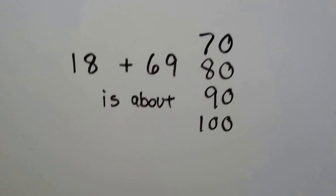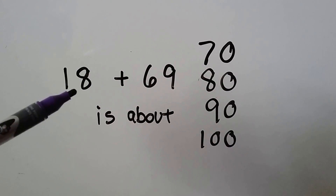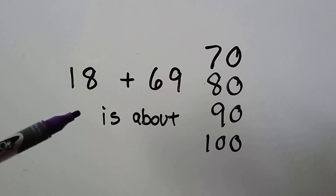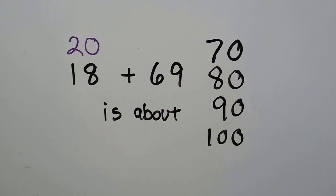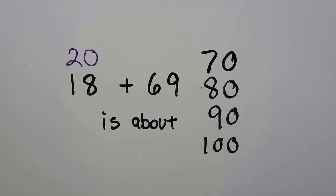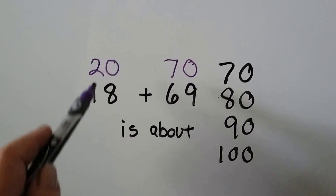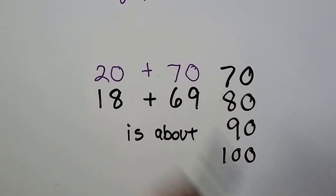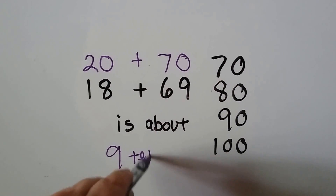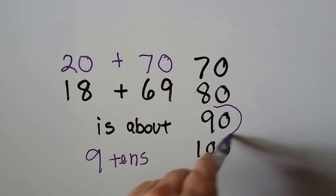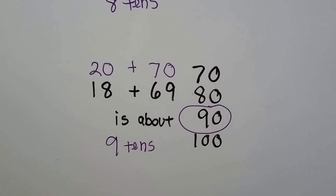Let's try it one more time. We have eighteen plus sixty-nine. What ten is eighteen close to — is it close to ten, twenty, thirty, forty? Eighteen is very close to twenty. What ten is sixty-nine close to — is it close to fifty, sixty, seventy, eighty? That's very close to seventy. So we can say twenty plus seventy. We have two tens and seven tens — that's nine tens. And nine tens is ninety. We're estimating the amount — finding about how many it is.